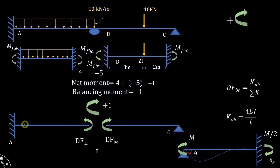The Moment Distribution Method is an iterative procedure — we have to keep repeating these same steps until the net moment at the joints is equal to zero. Now let's apply these steps to a problem.